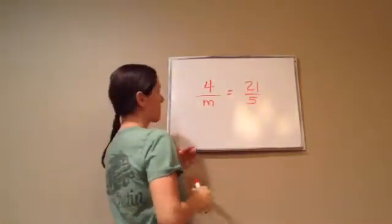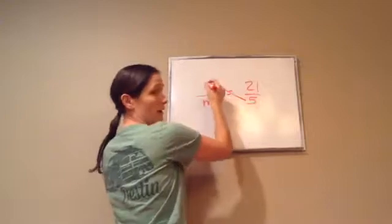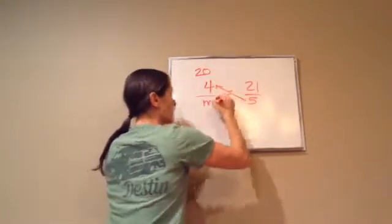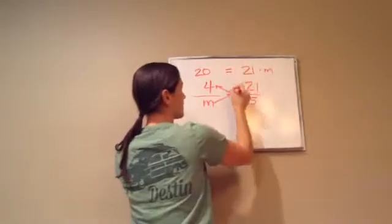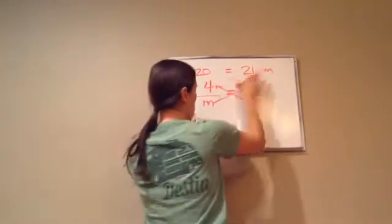Times 4, it's been a while, times 5. So you cross-multiply, right? 5 times 4 is 20. m times 21 is 21 times m. And then you just make them equal. See how that was equal? You just keep them as equal.